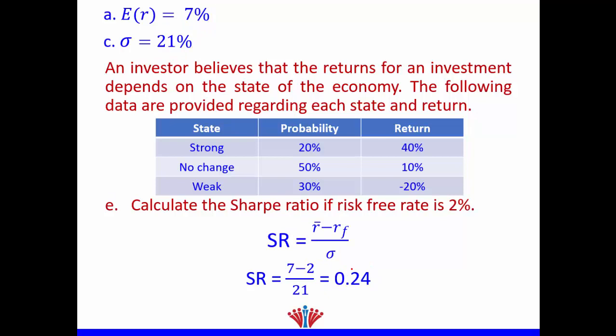The last part is to calculate the Sharpe ratio, given that the risk-free rate is 2%. The formula for the Sharpe ratio is: return minus risk-free rate, divided by risk. Our return is 7, minus the risk-free rate of 2, divided by our risk or volatility of 21. Remember not to use percentages. This gives us a Sharpe ratio of 0.24.